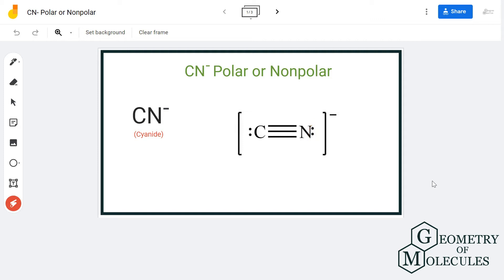The polarity of any molecule depends on its molecular geometry as well as the difference in electronegativities of the atoms. Here the molecular geometry is linear because there is a lone pair of electrons on both these atoms.